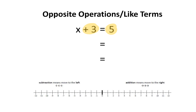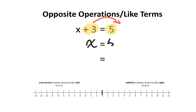Like terms like to be together. You can either bring the positive 3 together with the 5, or bring the 5 together with the positive 3. I'm going to bring the positive 3 over to be with the 5. Generally speaking, you want all your variables together on one side, and all your numbers together on the other side of the equation. When you move a term over the equal sign, it actually becomes the opposite. So that positive 3 is no longer positive — it now becomes negative 3.